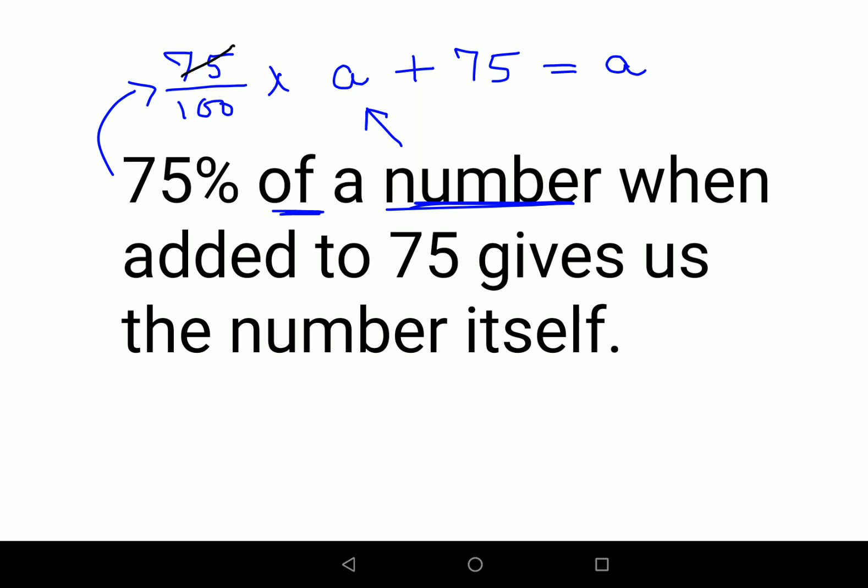All of us know that 75 and 100 can be reduced to 3 upon 4. So we have basically 3 upon 4a plus 75 equals to a. Shifting this 3 upon 4 to this side, so you have 75 equals to a minus 3 upon 4a.